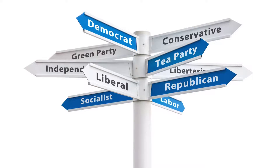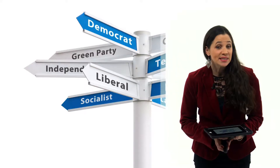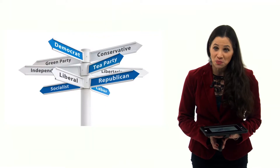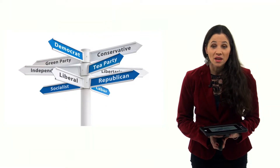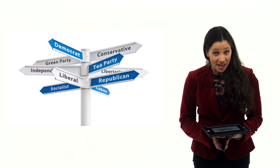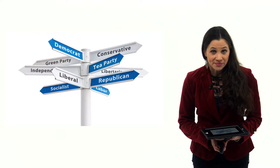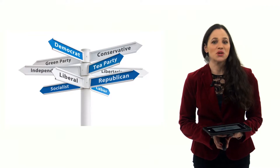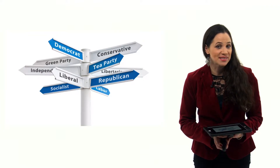Third parties are effective when they address the issues the major parties do not address. Some types of third parties are economic protest parties, issue parties, ideological parties, and factional parties. Let's start with economic protest parties.